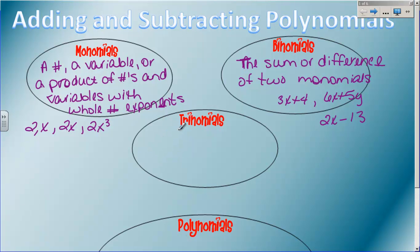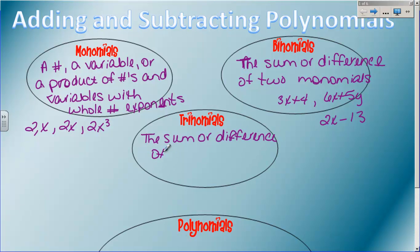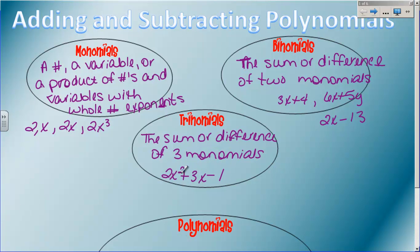Trinomials should be pretty easy. A trinomial is like a binomial except instead of two monomials together, it's three of them. So a trinomial is the sum or difference of three monomials. For example, 2x squared plus 3x minus 1. That is a trinomial because you have three different monomials separated with plus and minus signs.